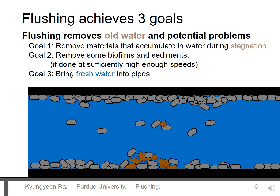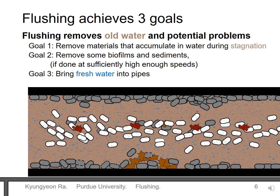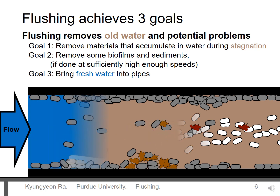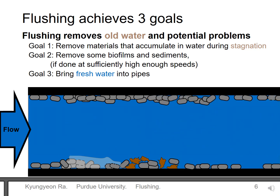When the water sits in the pipe, it gets old. During this time, more bacteria and harmful organisms move into the water and grow. Heavy metals like lead and copper also accumulate in the water. So by flushing, we can remove this old water so no one drinks or uses it. Flushing can remove some bacteria along the walls and sediments, but not all materials are necessarily removed.